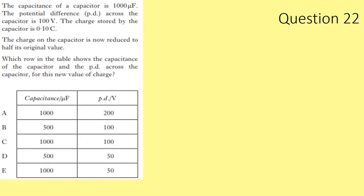Question 22. Capacitance is 1000 μF, potential difference is 100 V, charge stored is 0.1 C. The charge is now reduced. Capacitance is not affected by charge stored, so options D and B are incorrect. Storing half the charge means half the energy, so the potential difference is halved to 50 V. Answer: E.